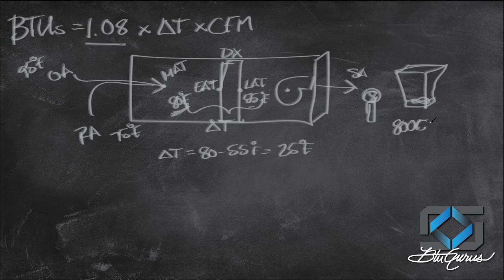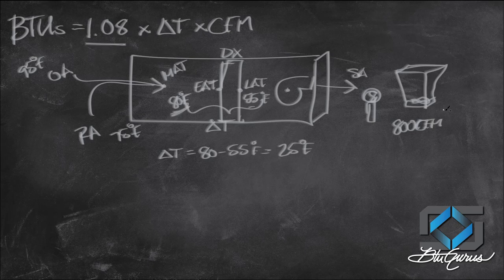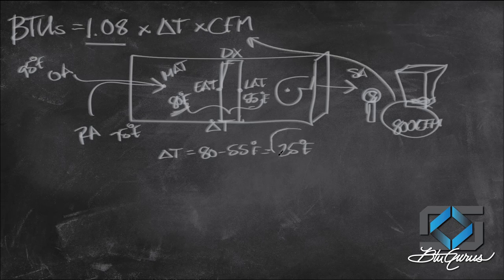In this case I'm just going to say it's 800 CFM. This would end up being measured on site. So if my CFM is 800 and my delta T is 25, then now I can calculate my BTUs.